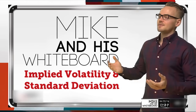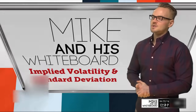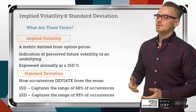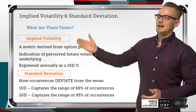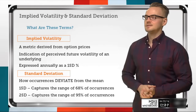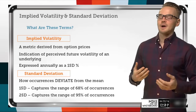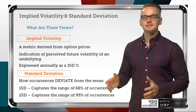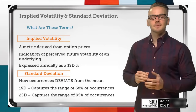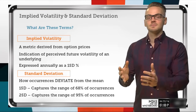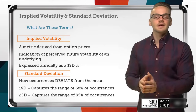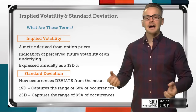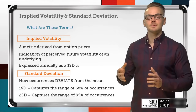On the very first slide here we're just going to talk about what these two things are. If we review what implied volatility is, it is a metric that's derived from option prices. It's not something that we know and input into the Black-Scholes model — it's actually something that comes out of all the other variables that we do know, such as the option's price.